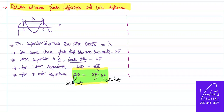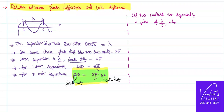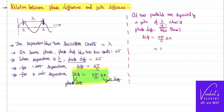I want to illustrate this further by solving a small problem. If two particles are separated by a path of lambda by 4, what is the phase difference between those two particles? Using the formula, phase difference equals 2π divided by lambda, times delta x. It is given that delta x is lambda by 4, so lambda cancels, giving 2π by 4, which equals pi by 2 radians, or 90 degrees.